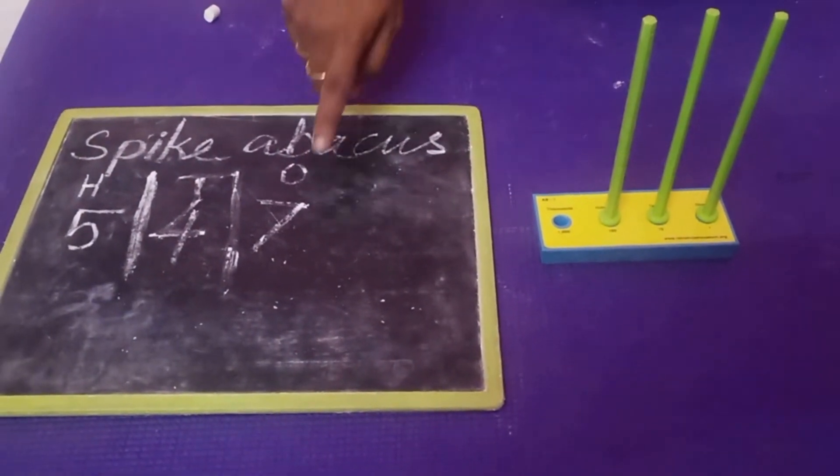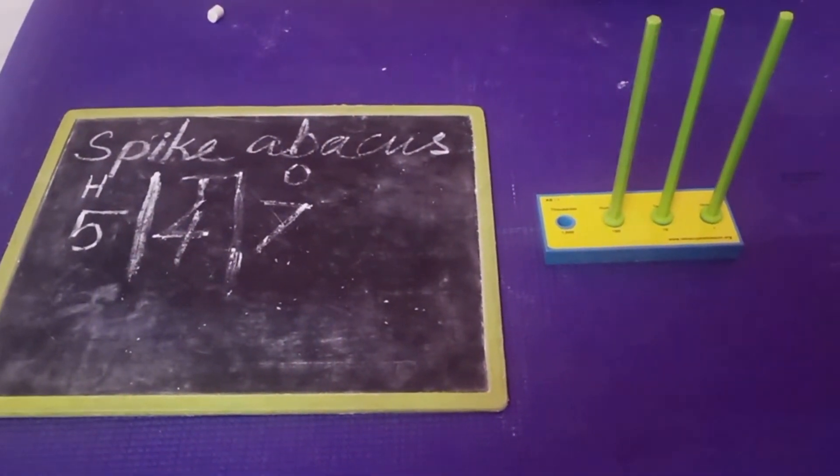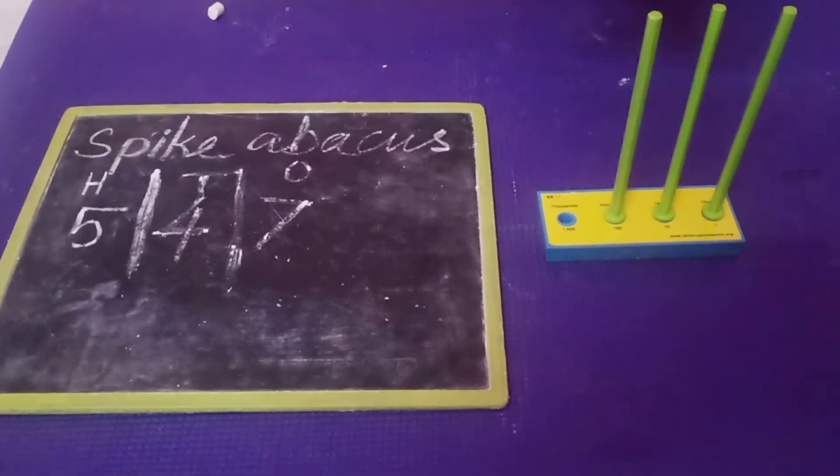First, you have to start from the ones. How many ones are we having? 7 ones. So I am going to place 7 here.